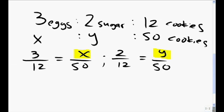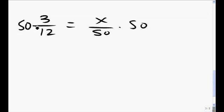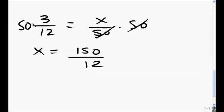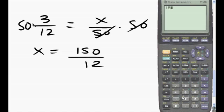We solve for X, solve for Y, we'll determine the amount of eggs required, the amount of sugar required for 50 cookies. 3 to 12 is X to 50. Multiply both sides by 50. Using algebra, we get X equals 150 divided by 12. This is the amount of eggs. Numerically, 150 divided by 12 is 12.5. In other words, we're going to need 12.5 eggs for 50 cookies.